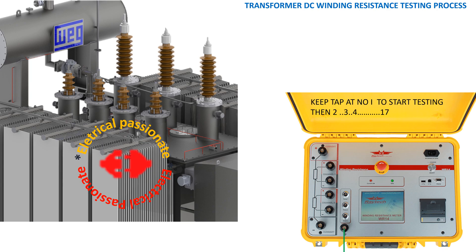On the HV side, we shall conduct the test between phases R and Y, keeping the tap position at number 1. Then we will proceed between taps 2, 3, 4, 5, up to 17. Let us watch the testing procedure at tap position 1 between R and Y.